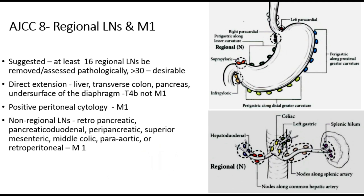It is important to understand that direct extension into adjoining organs — liver, transverse colon, pancreas, and diaphragm — is locally advanced disease, classified as T4b, but is not metastatic disease. Positive peritoneal cytology will be M1. Non-regional lymph nodes include retropancreatic, pancreaticoduodenal, peripancreatic, superior mesenteric, middle colic, para-aortic, and retroduodenal nodes.